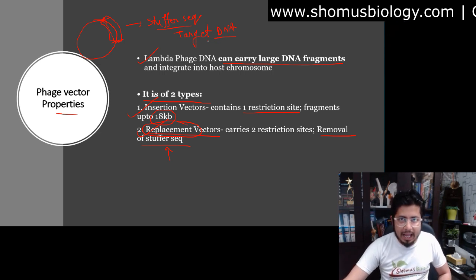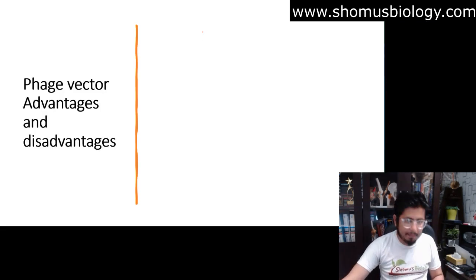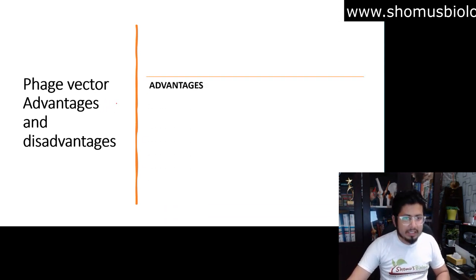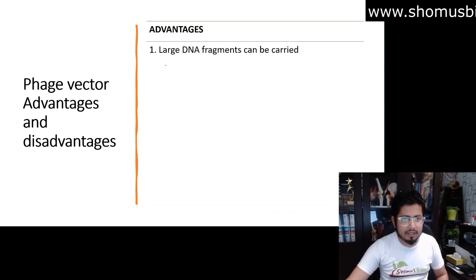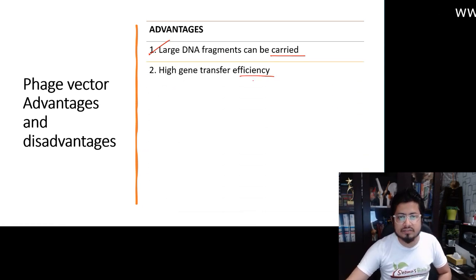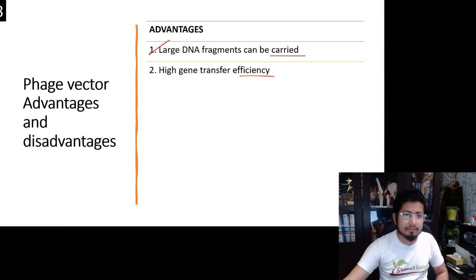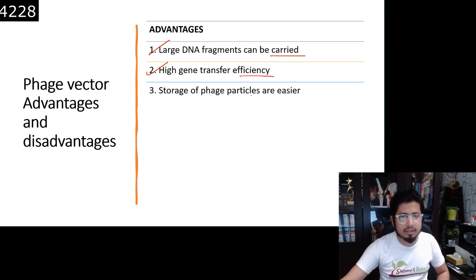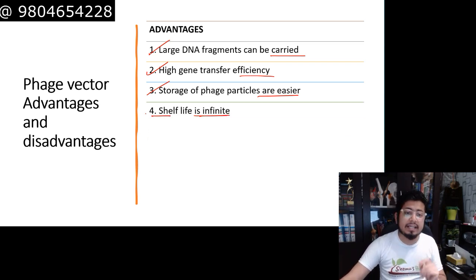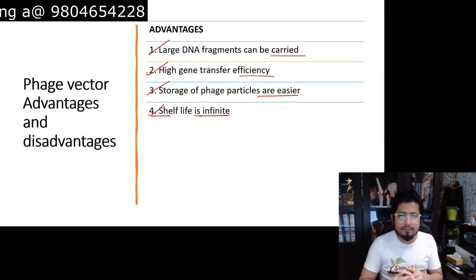The advantages of the phage vector include: large DNA fragments can be carried — 35 to 45 kilobases — which is one big advantage. High gene transfer efficiency is maintained, which is also very important. Third, storage of phage particles is quite easy using the phage vector. The shelf life can be infinite when dealing with bacteriophage, because when a virus is outside of the host it is considered non-living and can stay for an indefinite time period.